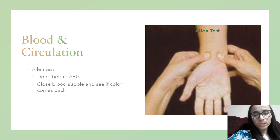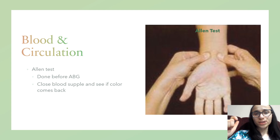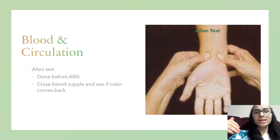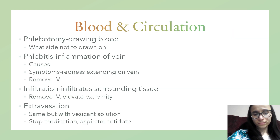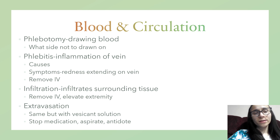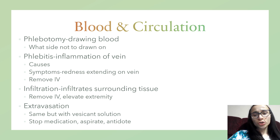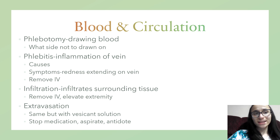Allen's test is done before collecting blood for ABGs — you block the blood supply and check if normal color returns to the hand. If it does, one artery is healthy enough to supply the hand alone and ABGs can be drawn. If negative, use a different site. Phlebotomy is the process of drawing blood — clean the site, fix and hold the vein, insert the needle at 15 degrees. Don't attempt insertion more than two times per person; ask someone else if needed. Never draw blood on the same side as an AV fistula or mastectomy.